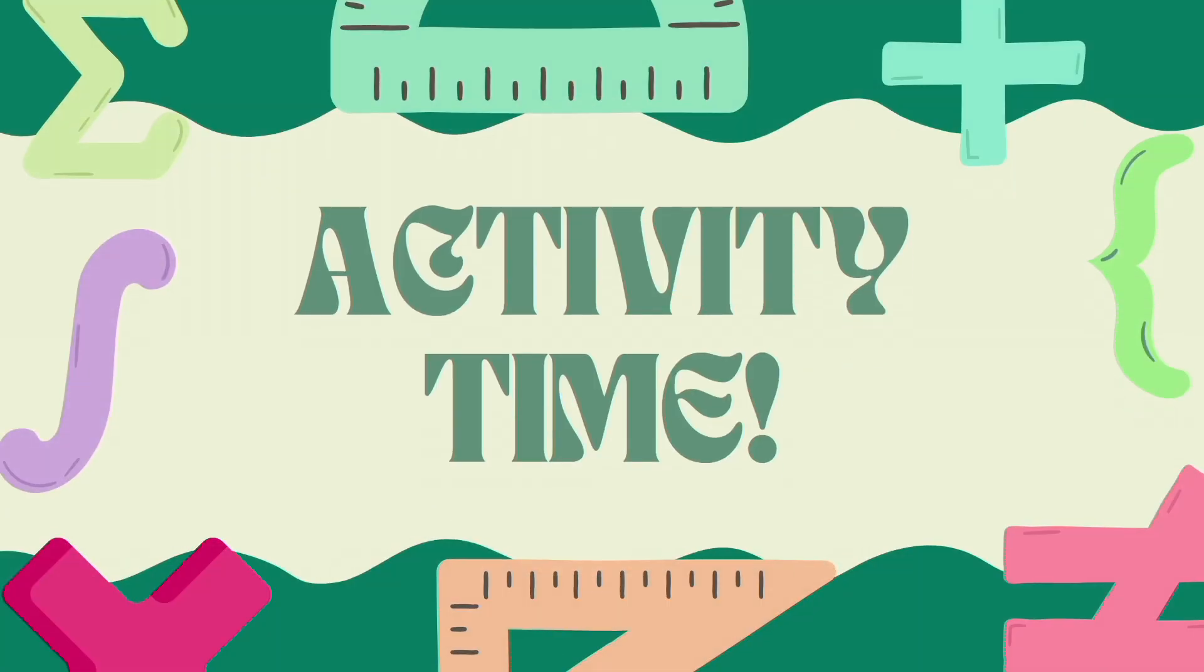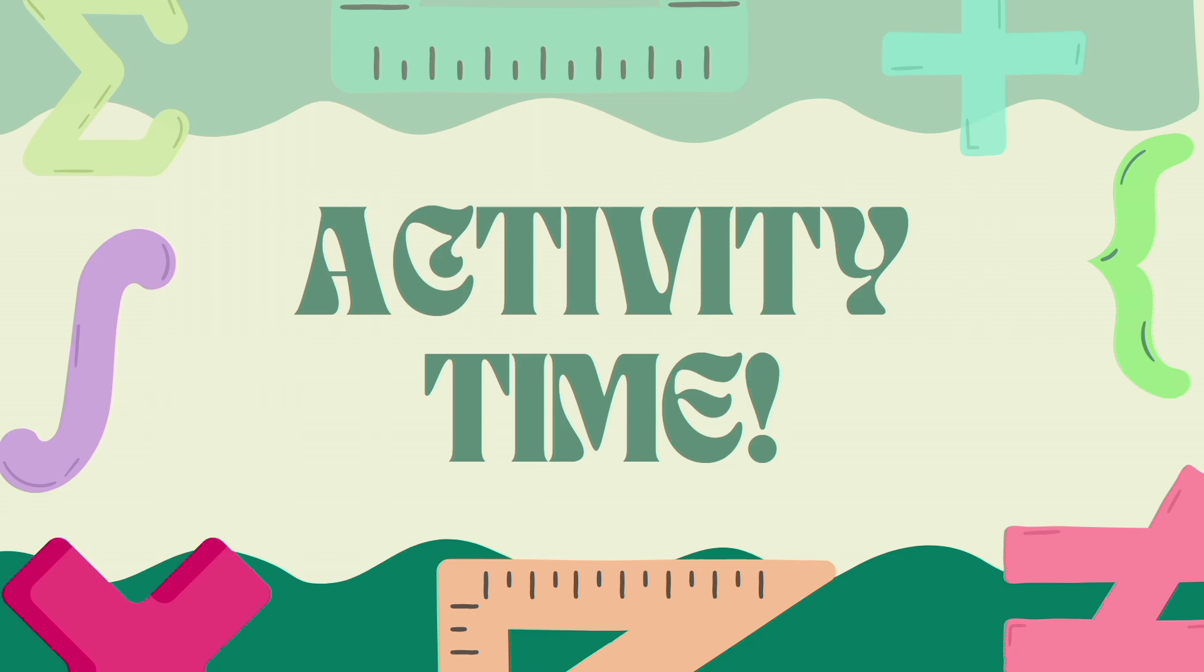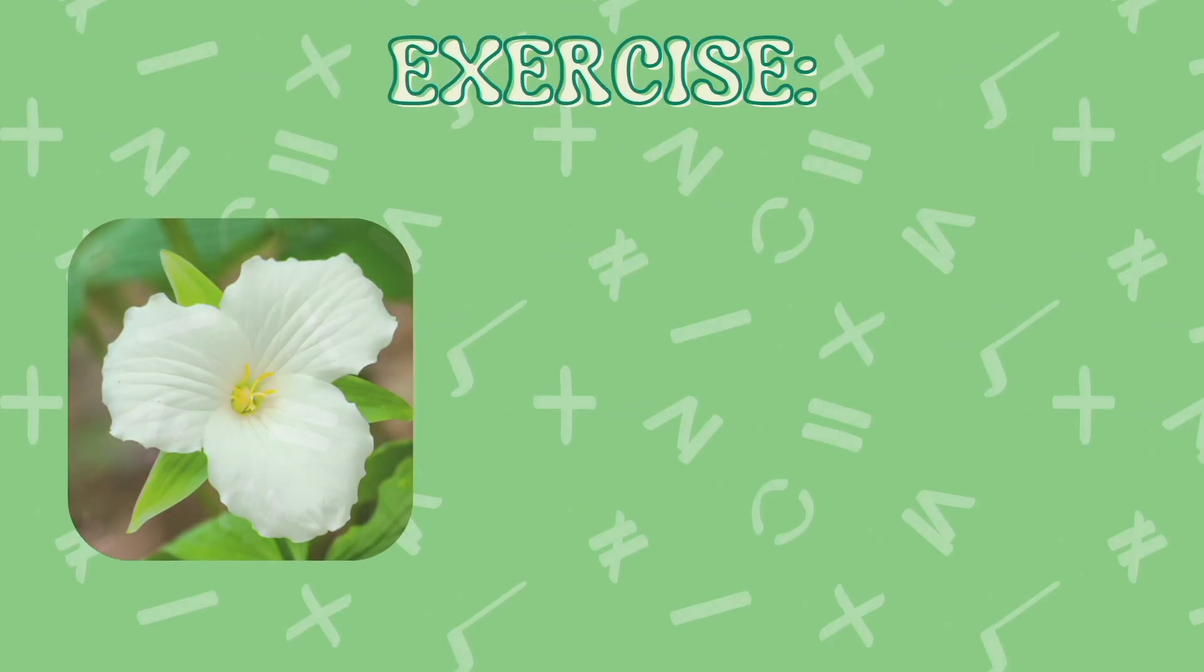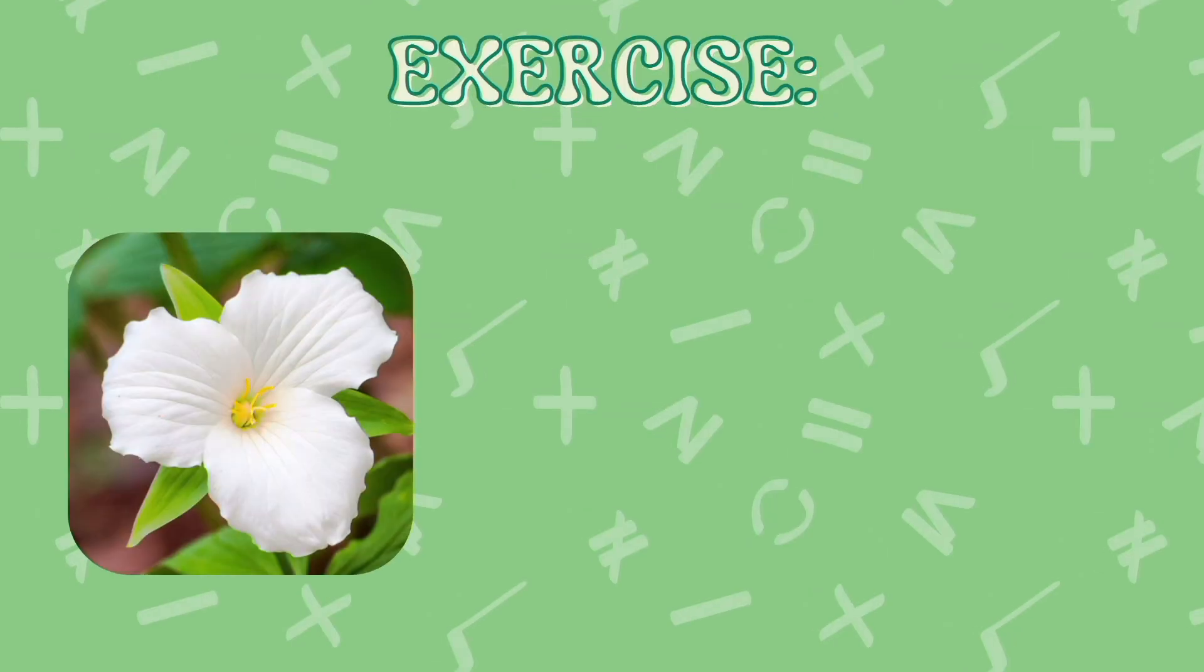But before that, I have prepared a simple activity. We're just going to identify what flower it is and how many petals it has. Do you know what type of flower it is? This flower is Trillium, a 3-petal flower.